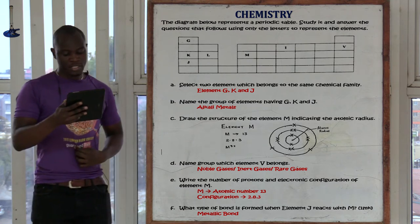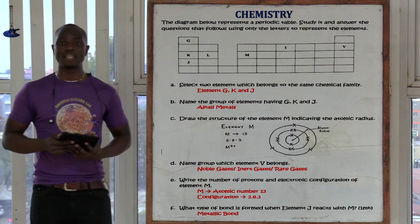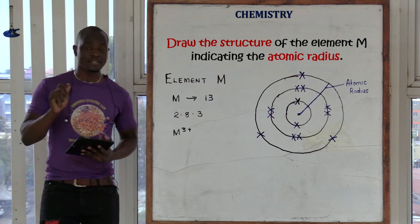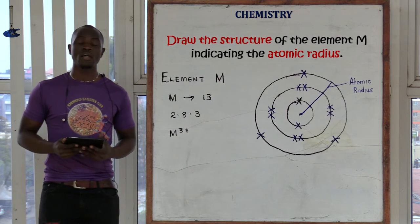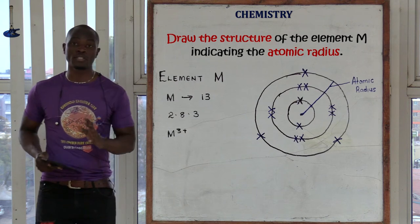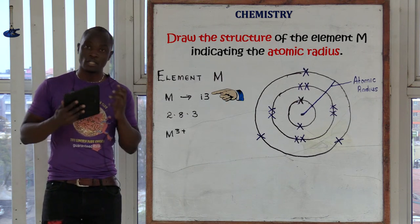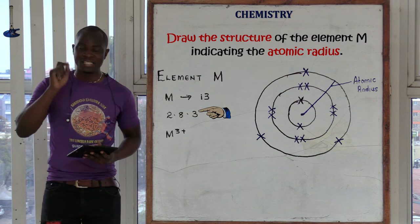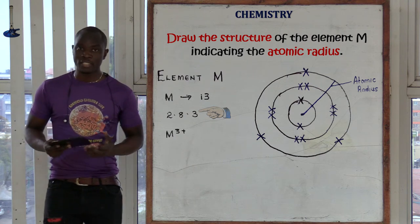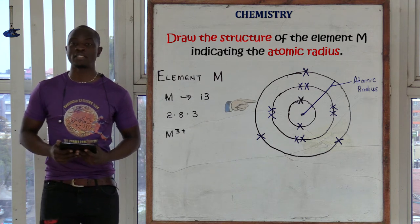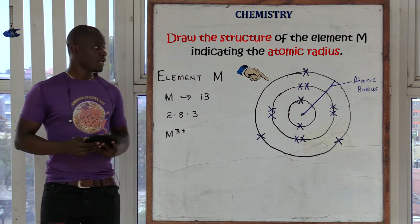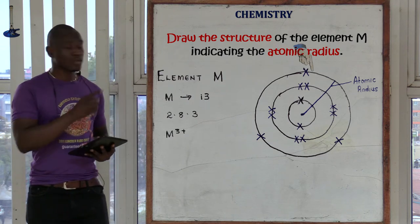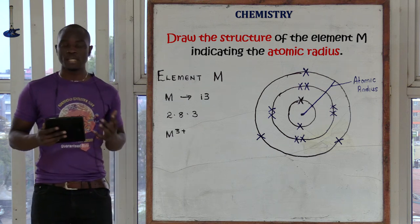The third question asks: draw the structure of element M indicating the atomic radius. Most students make a big mistake here. The first thing you should always do is identify the atomic number of that element. After identifying the atomic number, write the electronic configuration. Then draw the structure. In this case, element M has atomic number 13.